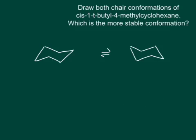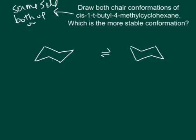So let's try another example. Draw both chair conformations of cis-1-tert-butyl-4-methylcyclohexane and then compare the two and determine which is the more stable conformation. First of all, we have to think about the word cis. The word cis means that the two groups are on the same side. So that means they are either both up or they're both down.